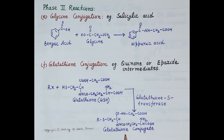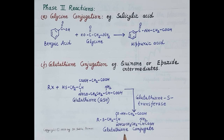Phase 2 reactions produce primarily inactive and very polar metabolites that are rapidly excreted from the body. This has been a brief overview of phase 2 biotransformation reactions. If you find the video useful, kindly like, subscribe, and share. Thanks for watching.